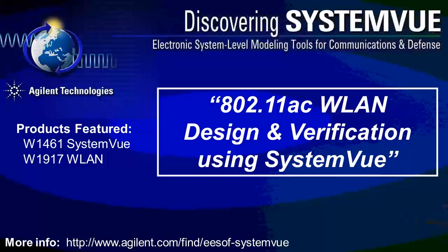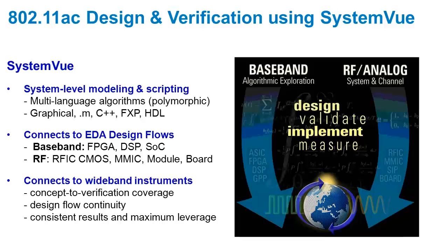In this demonstration video, we're going to apply Agilent SystemVue to the design and verification of an 802.11ac wireless LAN system. If you're new to SystemVue, it is a system-level modeling and scripting environment that accommodates several languages, connects to baseband as well as RF EDA hardware design flows, and connects to wideband instruments in a consistent concept-to-verification way. It unites both baseband and RF in a unified design flow.